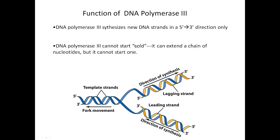The way DNA replication occurs is constrained by the capabilities of DNA polymerase. The two really key constraints are: first, DNA polymerase can only synthesize a new DNA strand in a 5' to 3' direction — new bases can only be added on the 3' end of a strand. This really limits the way things can happen at a replication fork.